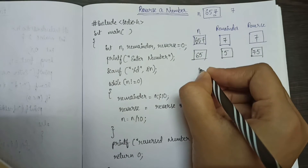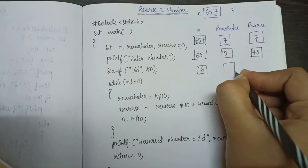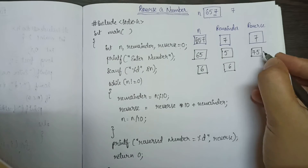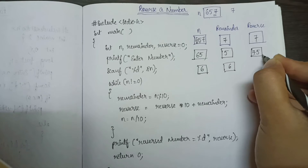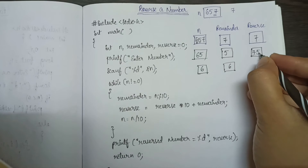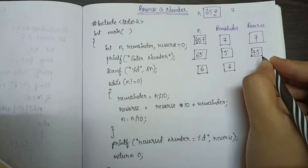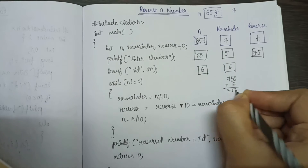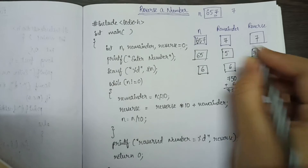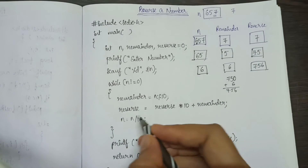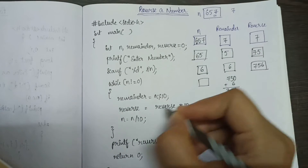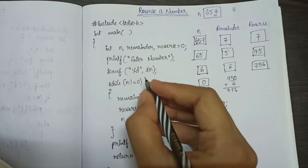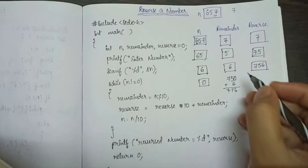Now to get the digit 6, n is equal to n divided by 10, so n becomes 6. Reminder is 6 modulus 10, which is 6. To append 6 to the units place, I multiply the previous reverse value 75 by 10 to get 750, then add reminder 6, giving reverse equals 756. Then n becomes 6 divided by 10 which is 0, so the condition fails and the loop exits. The reversed value 756 is printed.